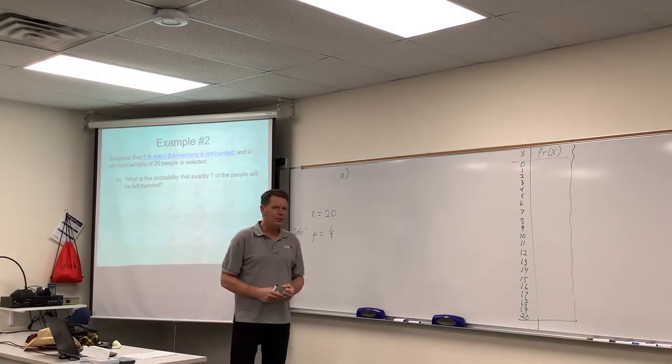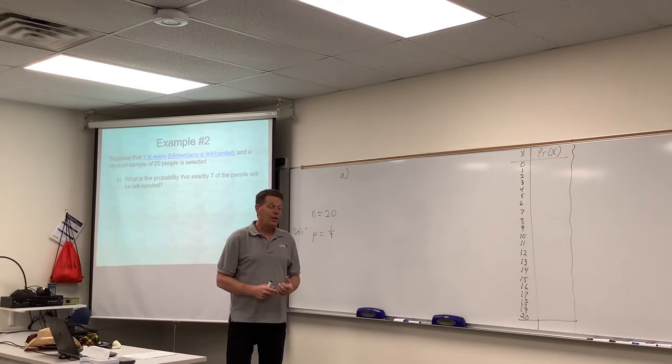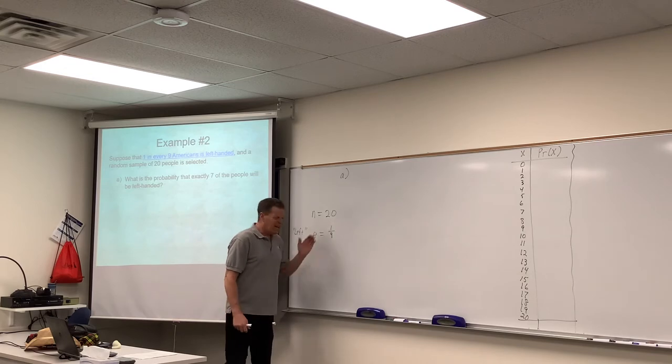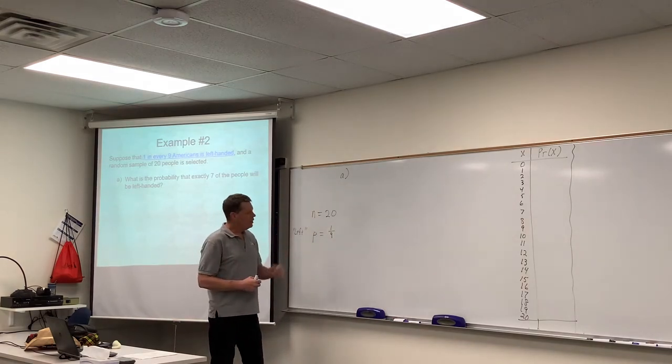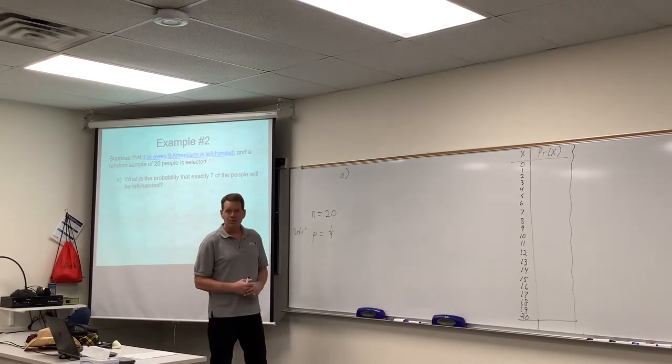In the previous example, where we were shooting a basketball, we changed them into decimal. 80% became 0.8. One divided by nine is a messy decimal that goes on forever. So I think, in this case, we'll leave it one-ninth.